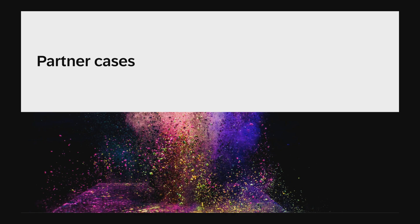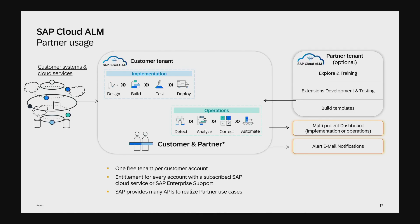Let's look at typical partner use cases — a summary of what I learned talking with some of you. This goes back to the tenant situation. Typically the customer tenant is connected to the customer's landscape with all on-prem and cloud services. In this customer tenant, implementation and operations activities happen, and both the customer and partner work together in this one tenant.